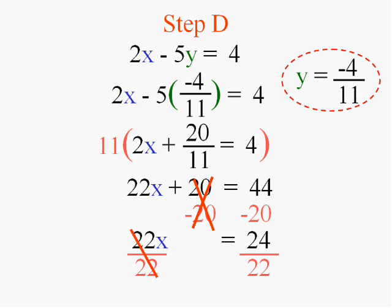And I have an answer 24/22, which is really 12/11. You have to reduce it.